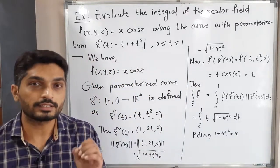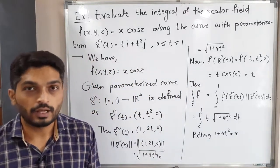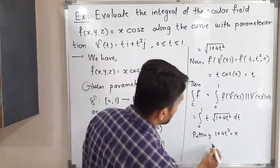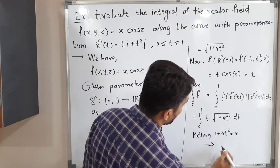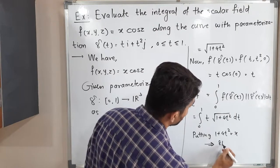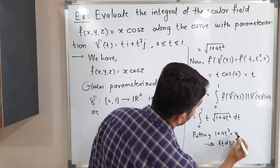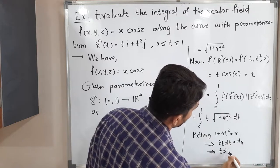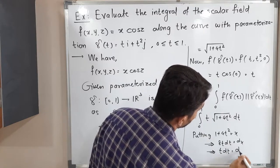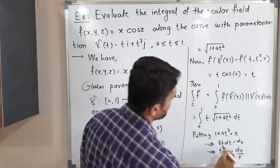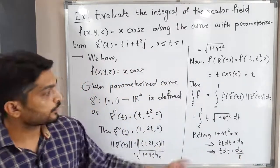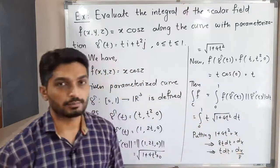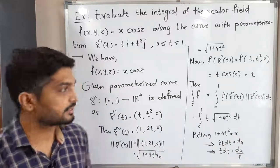Taking the derivative: d/dt(1 + 4t²) = 8t dt = dx, so t dt = dx/8. We can now replace t dt with dx/8. Next, let us find the new limits.